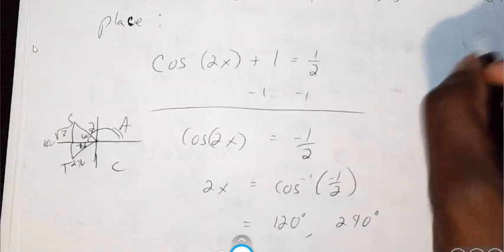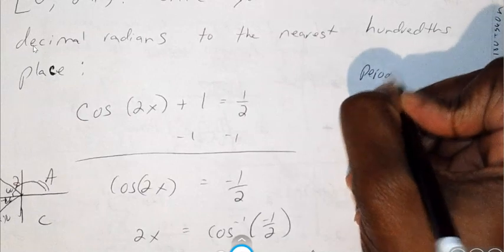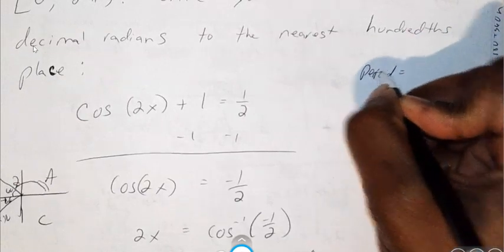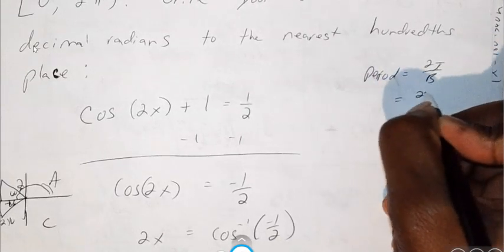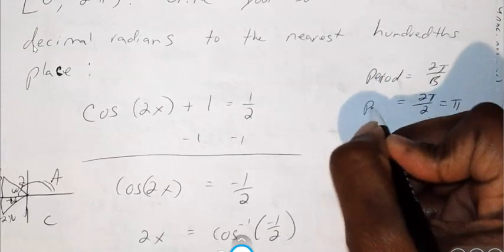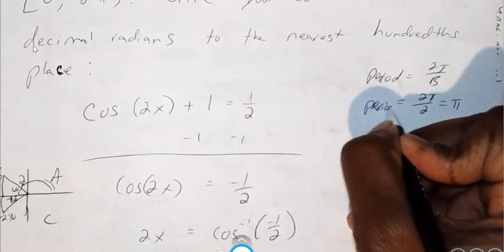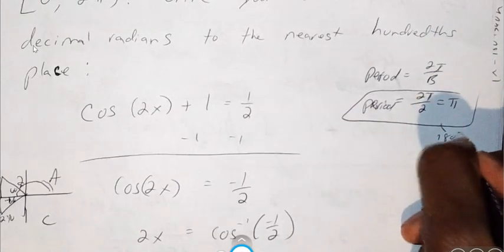The way we find our period is, the period for this problem should be 2 pi over b. So 2 pi over b, in this case b is 2, so it's 2 pi over 2 or pi. So my period for this problem is pi or 180 degrees.